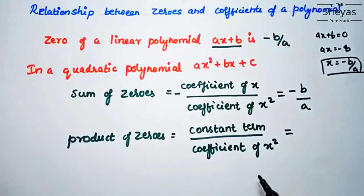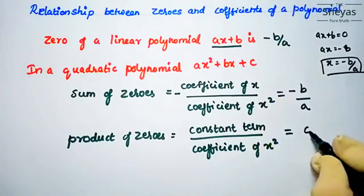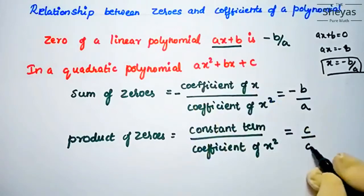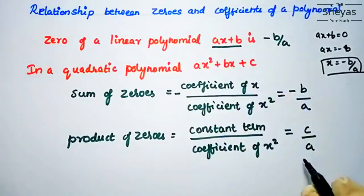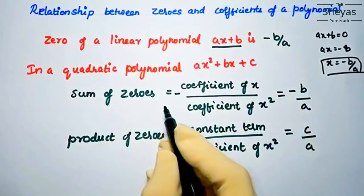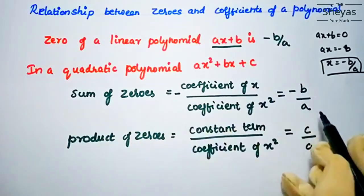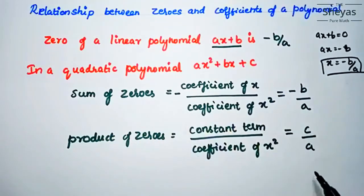The constant term is c and the coefficient of x squared is a, so product of zeros equals c by a. To summarize: sum of zeros equals minus b by a, and product of zeros equals c by a. You will understand this more clearly when doing the problems.